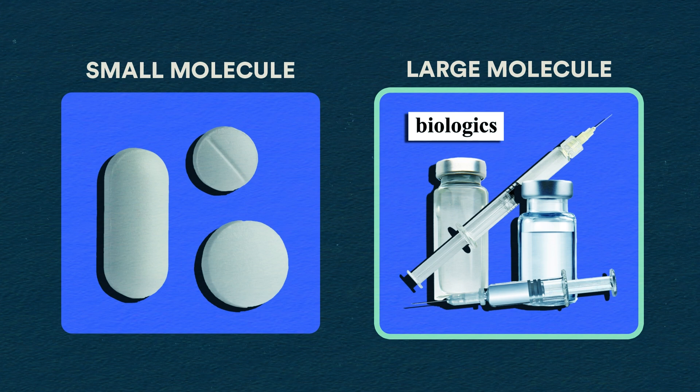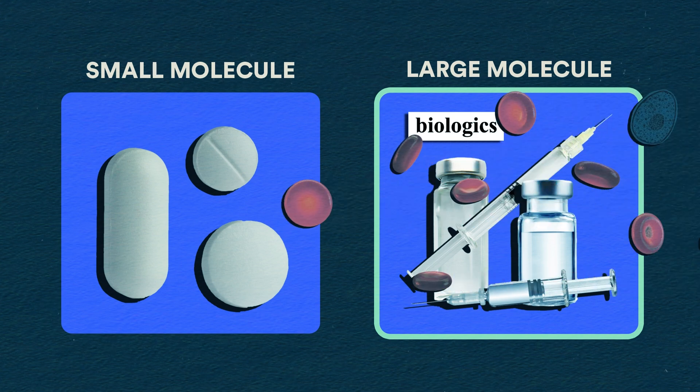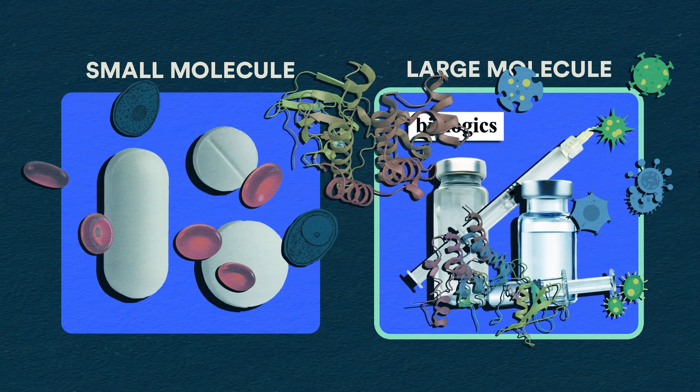Biologics are made from living organisms, which include blood and blood components, cells and tissues, proteins, bacteria, and more.